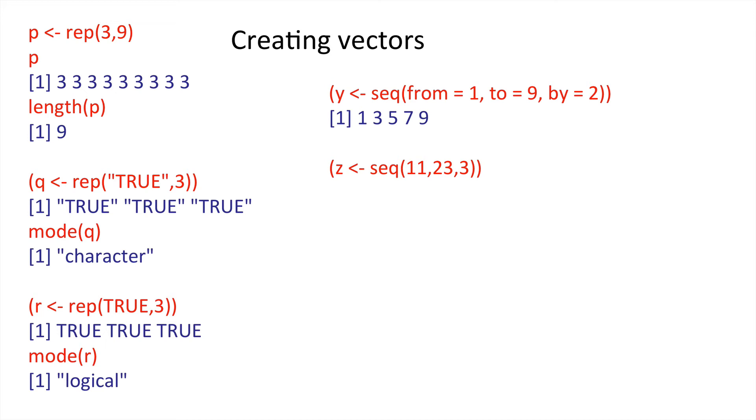Now, here what we could do is seq 11, 23, 3. So, we've missed the names of those arguments. And you'll see here that's what we get.